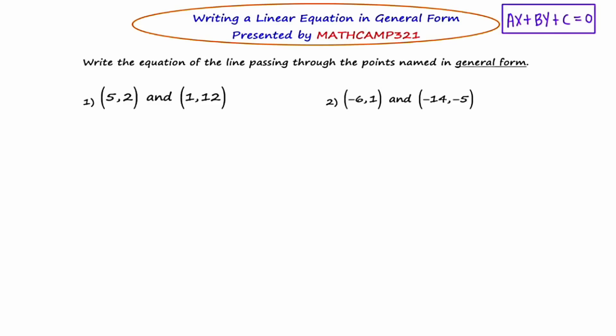Here are two examples that I'd like to work through to help you understand this a little bit better. Let's start with example one. They tell us that there is a line that passes through the points (5, 2) and (1, 12).